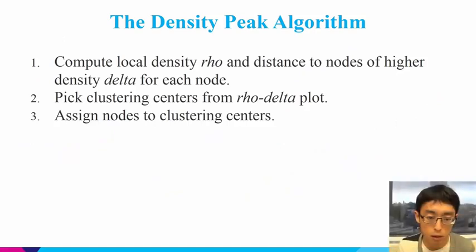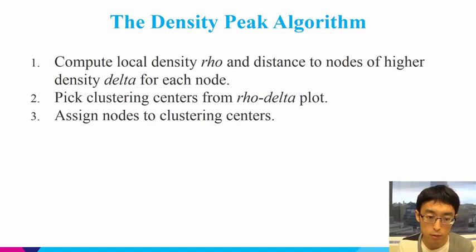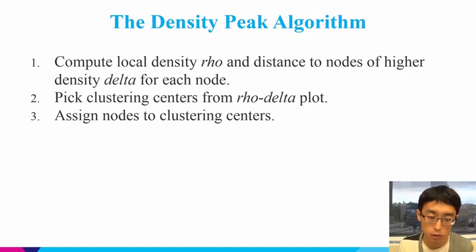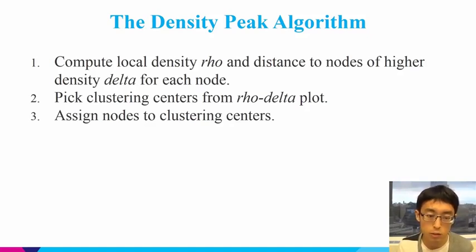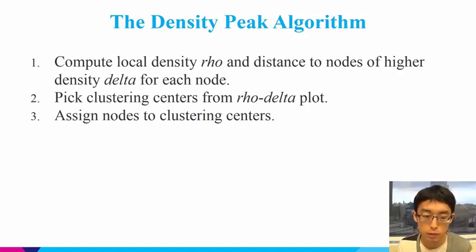Next, I will briefly explain the density peak algorithm. There are three steps: the first is to compute the local density rho and the distance to nodes of higher density, delta. The second step is to pick the clustering centers from the rho-delta plot. The third step is to assign nodes to clustering centers. I will explain these three steps one by one.